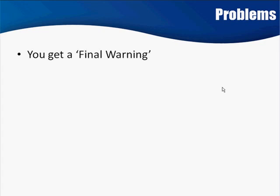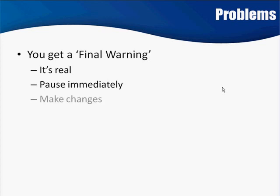If you get a final warning email from Google, it is real — take it very, very seriously. Pause your ads immediately, stop the campaign right then and there, and then go in and make the changes. If you get that final warning, they are not playing with you, and you could very well lose that account. For that reason, I always recommend having two accounts so you can fall back on one. Even if you're running both at the same time, that's fine — always have two. That way, if they shut down one, you bounce over to the other, and right away set up another so you always have two live and usable accounts.